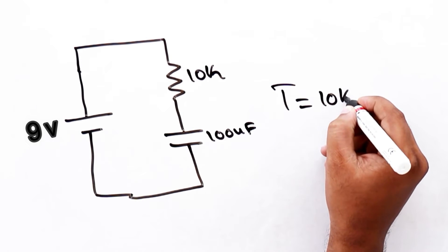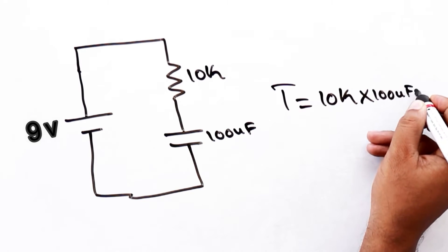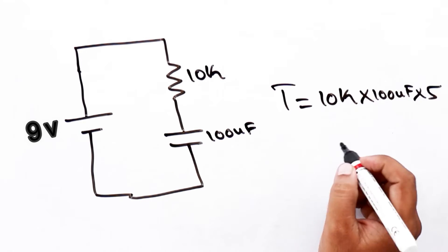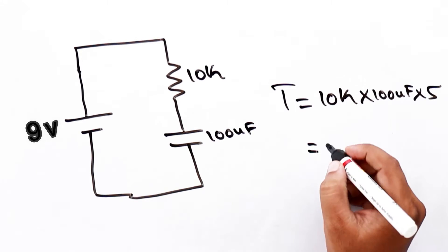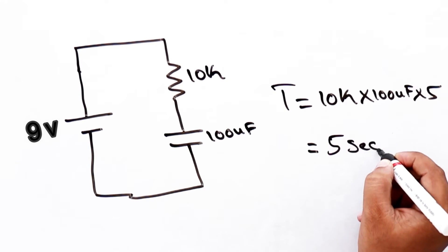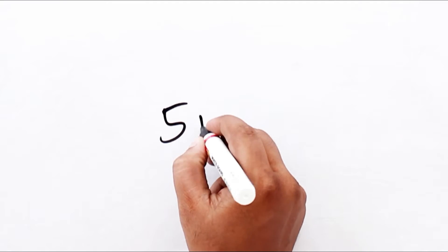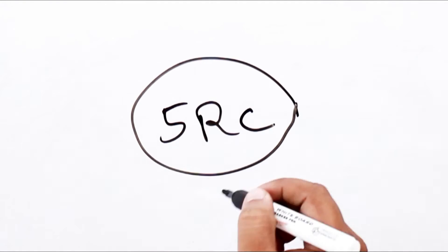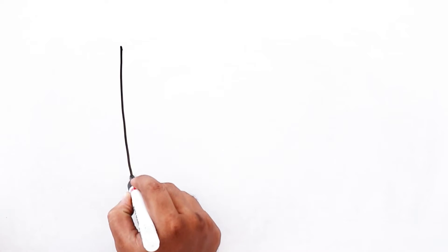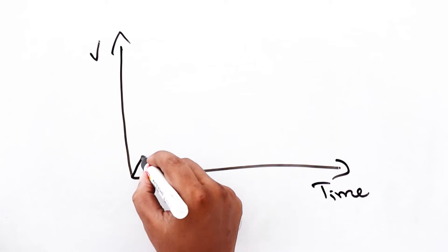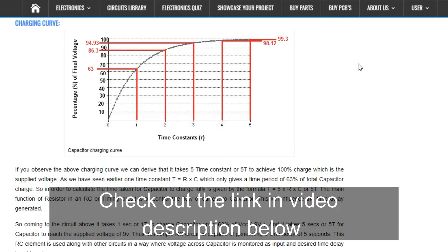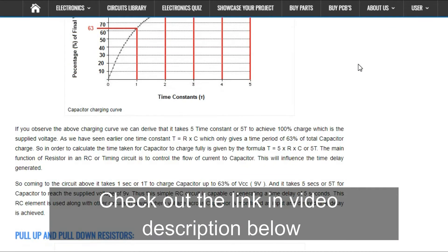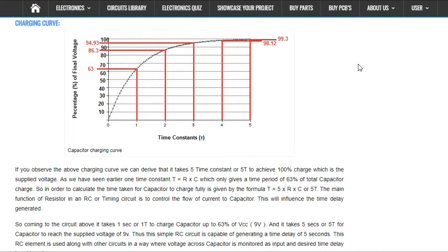So consider a circuit where a 9V is applied to a RC circuit where Resistor value is 10K and Capacitor value is 100μF. This will give a time delay of about 5 seconds delay for capacitor to charge fully. The reason it takes 5T or 5RC time period is because of the charging curve of capacitor. This concept is out of scope of this video, however, I have explained this in detail in the article link given in the description below.